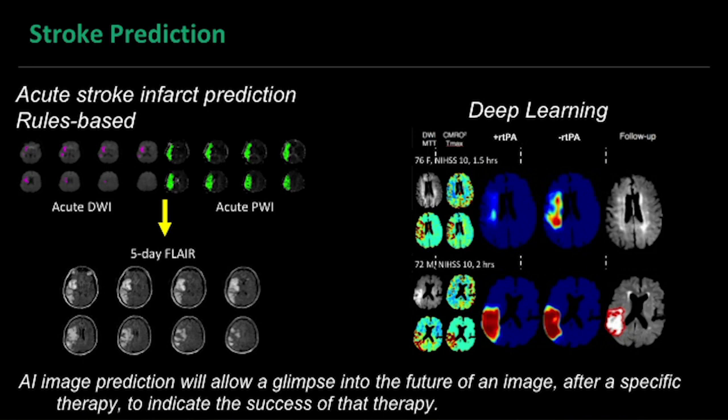These are two patients — similar ages, similar severity of stroke, similar time from onset. In the top example, the model trained with treatment predicts a smaller final stroke lesion compared to the non-treatment model, so this is a patient we think will benefit from treatment. The patient on the bottom looks very similar, but when we run it through the two models, the size of the stroke looks about the same whether you treat or not — so this patient may not be optimal for treatment. What we're really doing is personalizing therapy: predicting whether treatment will be successful, and what the patient will look like at a future time point. Stroke is one example, but you can imagine this applied to many other situations.